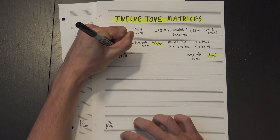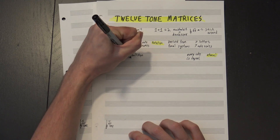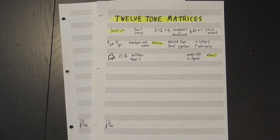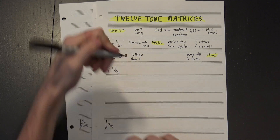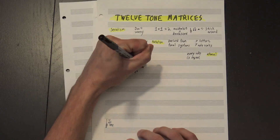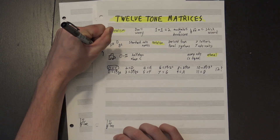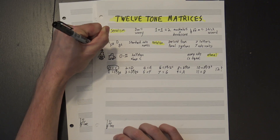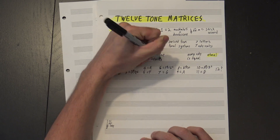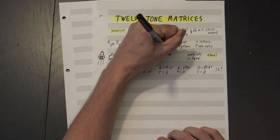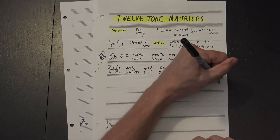Instead, we just use the numbers 0 to 11, signifying how many half-steps above C the note is. So 0 is C, 1 is C-sharp or D-flat, 2 is D, and so on. Once you get to 12, you're back at C, so we reset to 0 and continue up again. This system lets us easily visualize intervals, which is more important here than whether a note is sharp or flat.